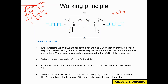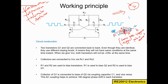This is the basic circuit design studied at bachelor level. Now we will see the construction of the astable multivibrator. There are two transistors: Q1 and Q2, connected back to back. The base, collector, and emitter terminals are visible. Even though they are identical in type, they use different doping levels.